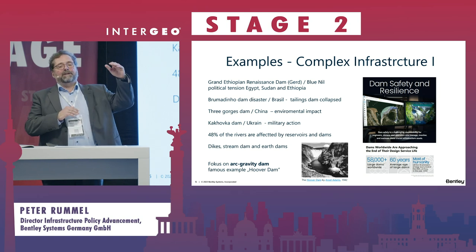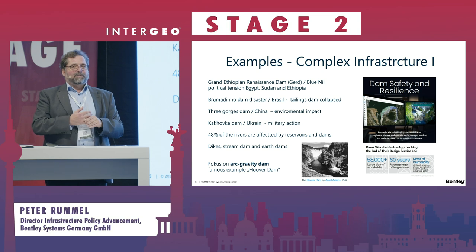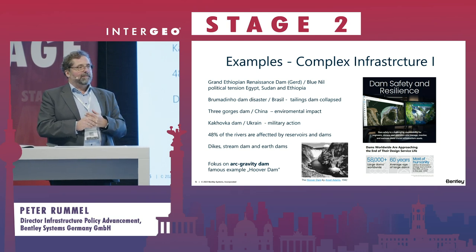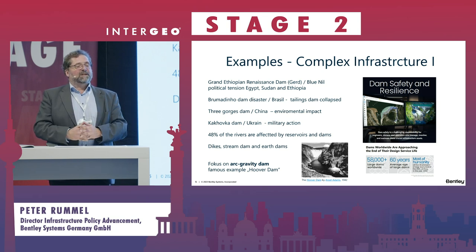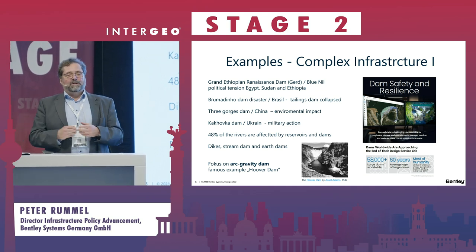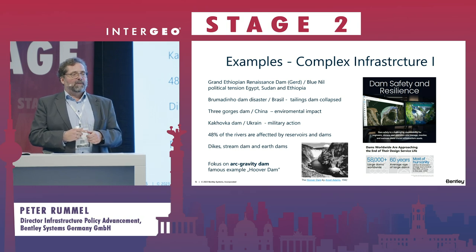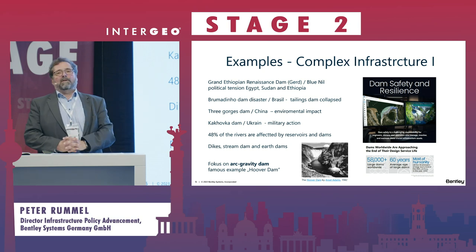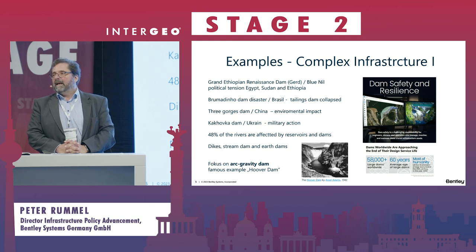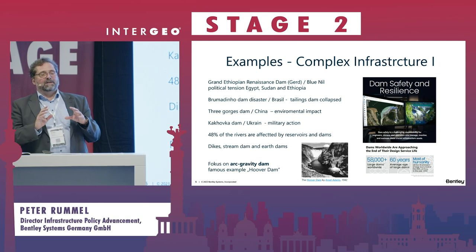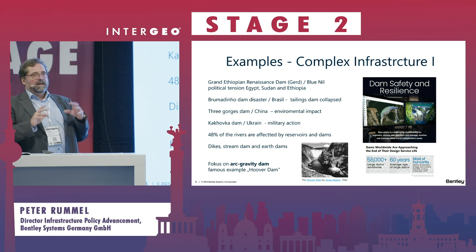When talking about complexity, let's start with some examples. There is a level of complexity above engineering. We have a dam project involving Egypt, Sudan, and Ethiopia — the Nile River — which has significant political implications. Some years ago there was a disaster in Brazil with tailings that collapsed, involving not only engineering but legal and insurance problems. Then there are Chinese projects raising questions about relocation of people, and most recently the dam in Ukraine, where infrastructure was weaponized. We need to be aware there is a broader responsibility.